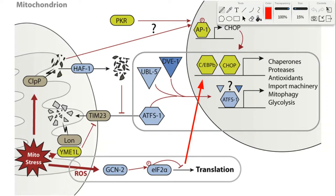Mitochondrial depolarization leads to two primary critical events: one, it opens mitochondrial permeability transition pores; and two, it stalls protein import.